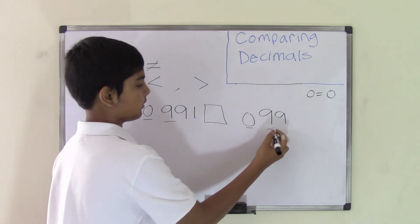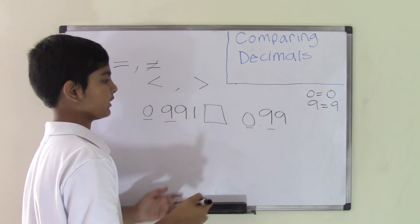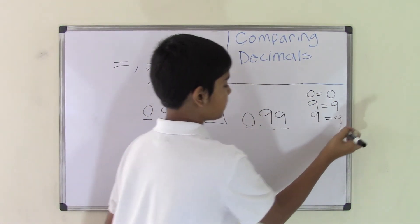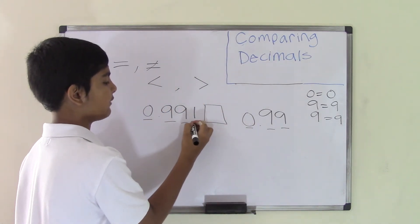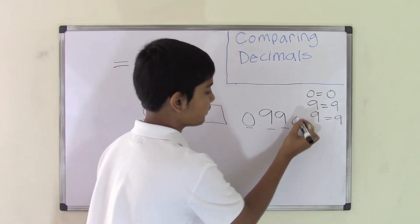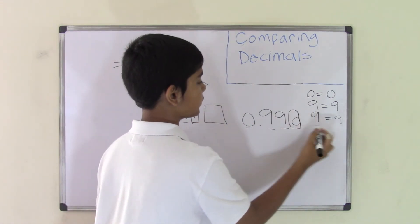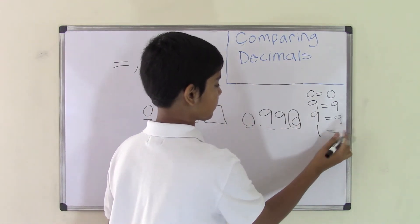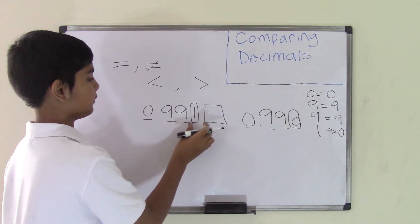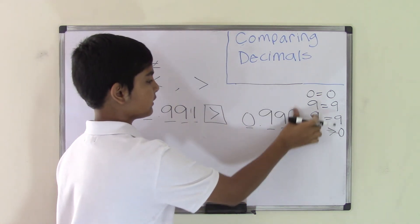The second digits are 9 and 9 — equal. We move on to the next number, which is 9 and 9 again — equal as well. Then we move on to the next digit: we get the number 1, and we don't have another number here, so we can put a 0. We know that 1 is greater than 0, so 0.991 is actually greater than 0.99.